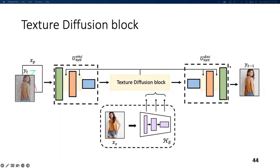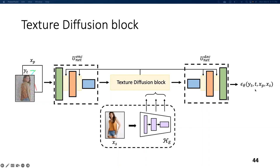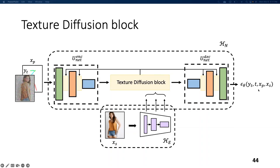The Texture Diffusion Block is embedded among all the UNet encoder and decoder layers. Instead of directly predicting the denoised image, the authors propose — following previous works — to predict the noise that was added at YT given XP and XS. The top architecture is called HN and the bottom style encoder is called HE.